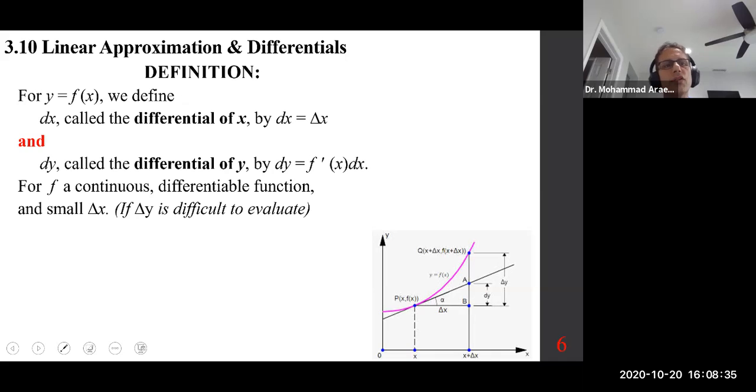The idea of a differential by definition: if y equals f(x), then the differential for x is dx, which is identical to delta x. So this delta x or run is equal to dx. Dy, called the differential for y, is f'(x) times dx for a continuous function. And when delta x is pretty small, we replace the delta y with dy. So let's discuss those and see what's going on.